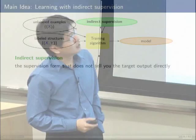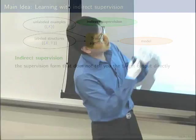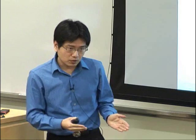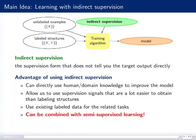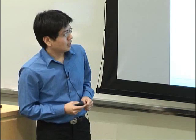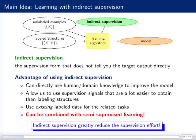What is indirect supervision? The rough definition is a supervision form that does not tell you the target output directly. For example, in the meaning representation example, the response doesn't tell you the meaning representation directly, but it carries some information about your output. The constraint doesn't tell you the target output directly, but it tells you something about what the target output should look like. The advantages of using indirect supervision are: we can directly use human domain knowledge to improve the model, it allows us to use supervision signals that are easier to obtain, and it can be combined with semi-supervised learning.